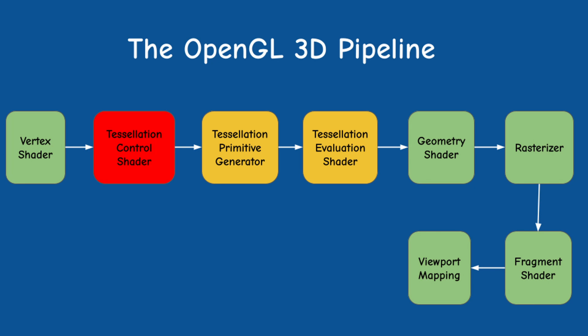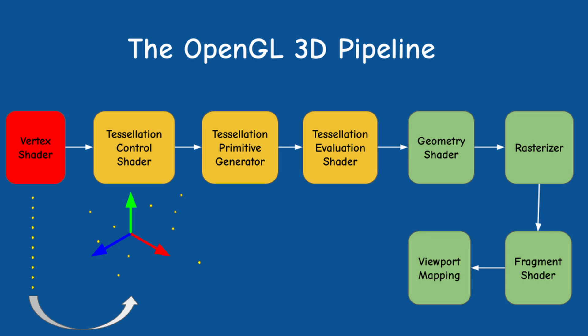We are now ready to discuss the first stage in the tessellation process, the tessellation control shader or TCS. This is a regular shader stage so we have some GLSL code to execute here. Before we jump into the TCS let's understand the role of the vertex shader when the tessellation is active. The truth is that nothing really changes from the point of view of the VS. It still executes once per input vertex before the system assembles the vertices into patches to be sent to the TCS.